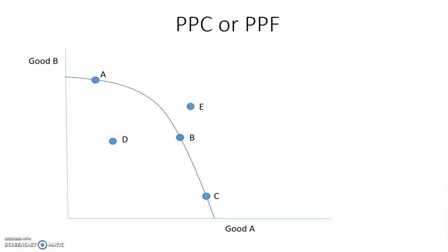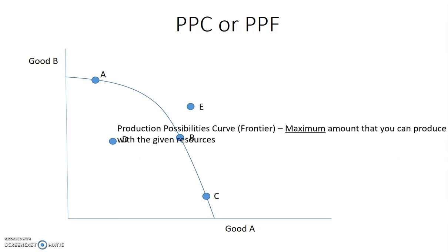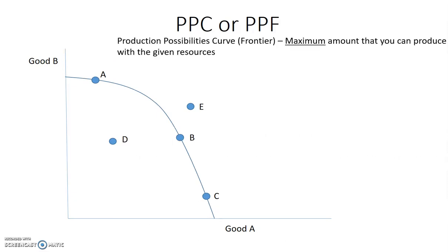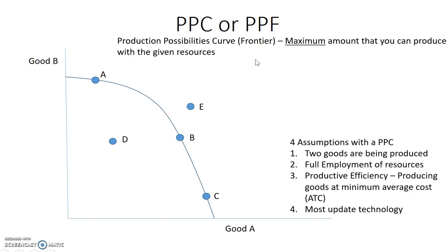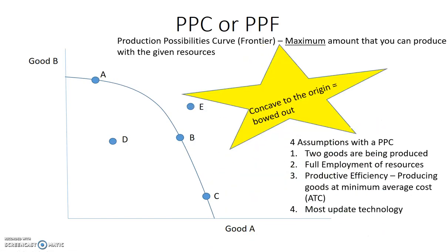The Production Possibility Curve, known as the PPC, is the maximum amount that you can produce with the given resources. The key word there is maximum. The way we describe how the PPC looks is that it is concave to the origin, or bowed out.